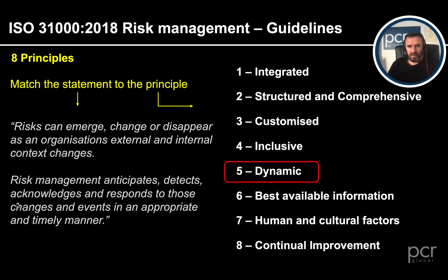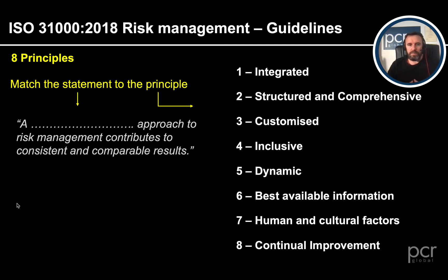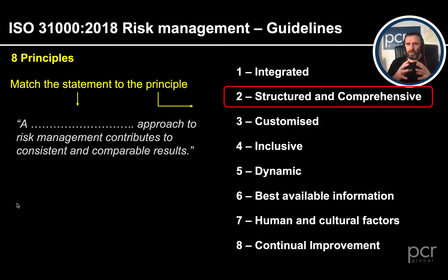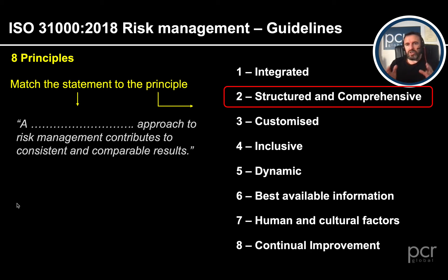A structured and comprehensive approach to risk management contributes to consistent and comparable results. We've got consistency and comparability in there. We've got to work out what that structure looks like, embed it into the organization, and people have to be trained on it. It must be as comprehensive as is needed — and remember, because we said it has to be customized, in certain areas that may not be too comprehensive. But when we develop the framework and the policies, and look across the organization to see where and how to embed this, structured and comprehensive gives us the best potential for consistency.